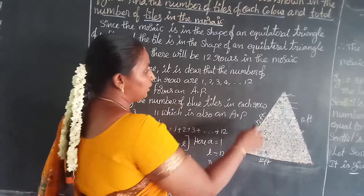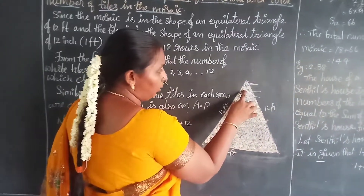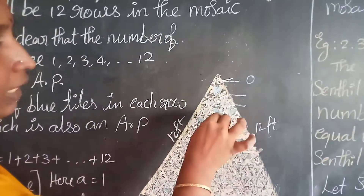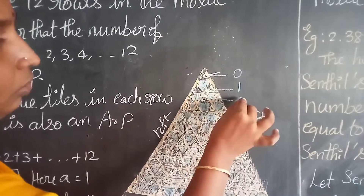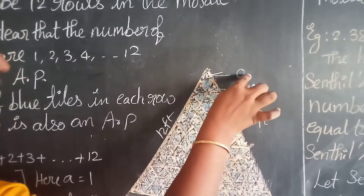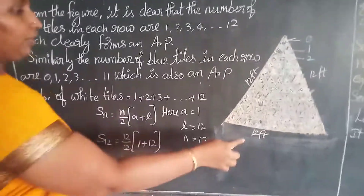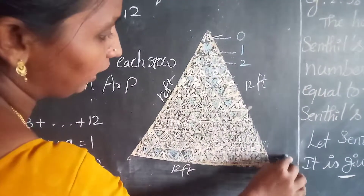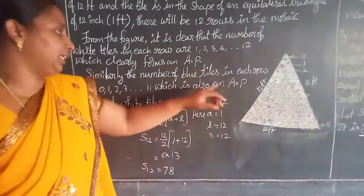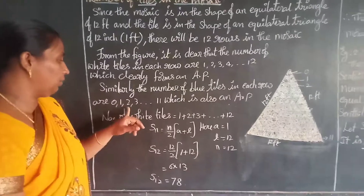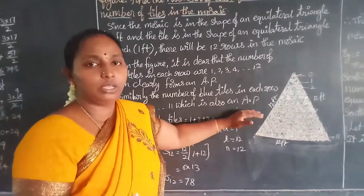The number of blue tiles per row forms the sequence 0, 1, 2, 3, and so on up to 11 in the last row, which is also an AP. Now, adding all the white tiles: 1 + 2 + 3 + ... + 12. Using the sum formula SL = N/2 × (A + L), with A = 1, L = 12, and N = 12 rows.